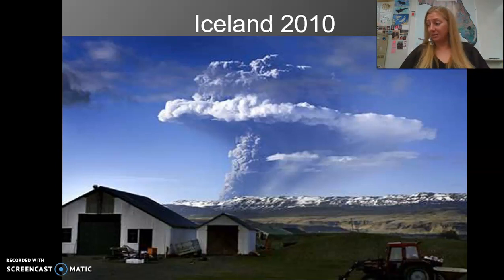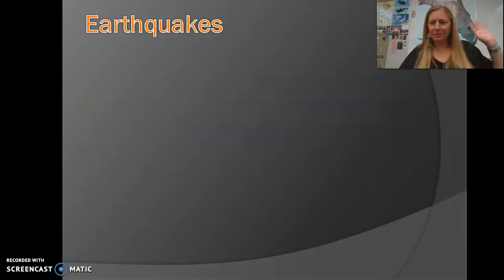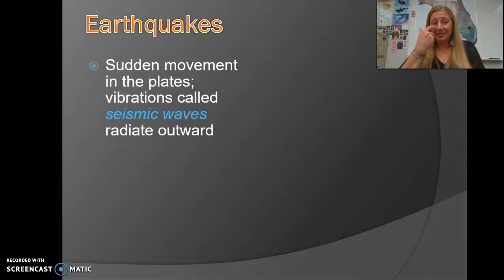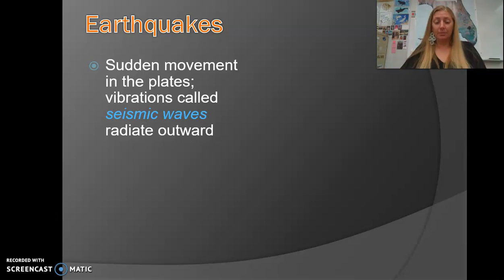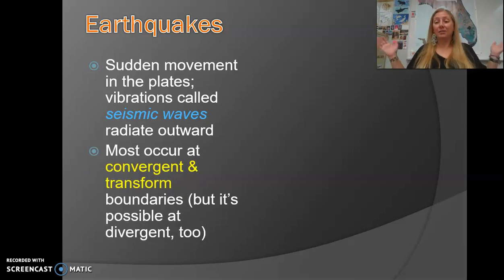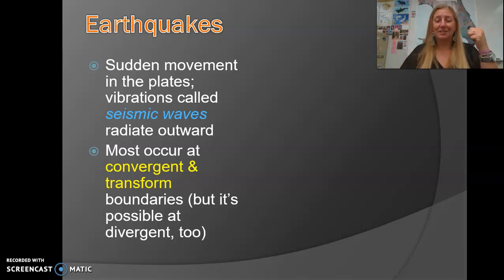Planes could not fly through there — by Iceland, which is a normal route from North America to Europe — because of fear of all that ash getting in the engines and causing engine failure. You're not going to be tested on that, just interesting things. Earthquakes: an earthquake is where you have a sudden movement of a plate. The vibrations, otherwise known as seismic waves, radiate outward in all directions from that sudden plate movement. The majority of earthquakes happen at convergent and transform boundaries, but because an earthquake is anytime the plates move, earthquakes can happen at all three types of plate boundaries.